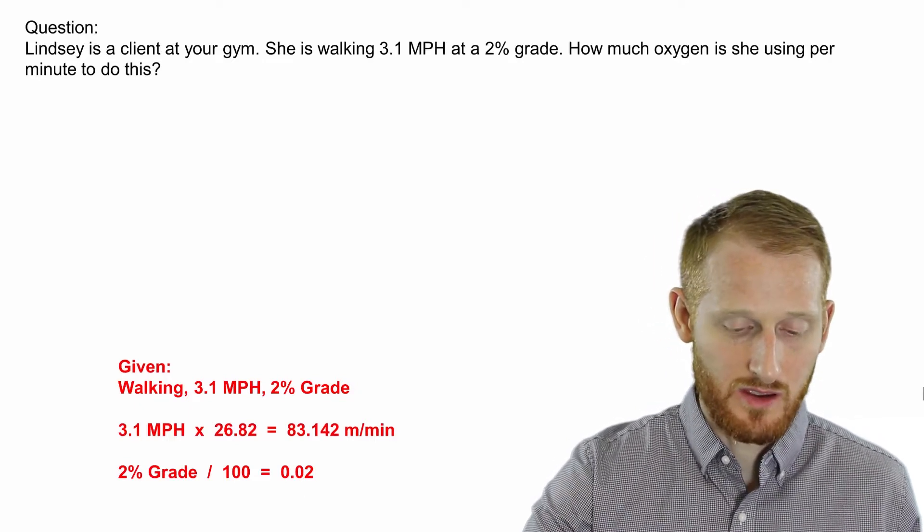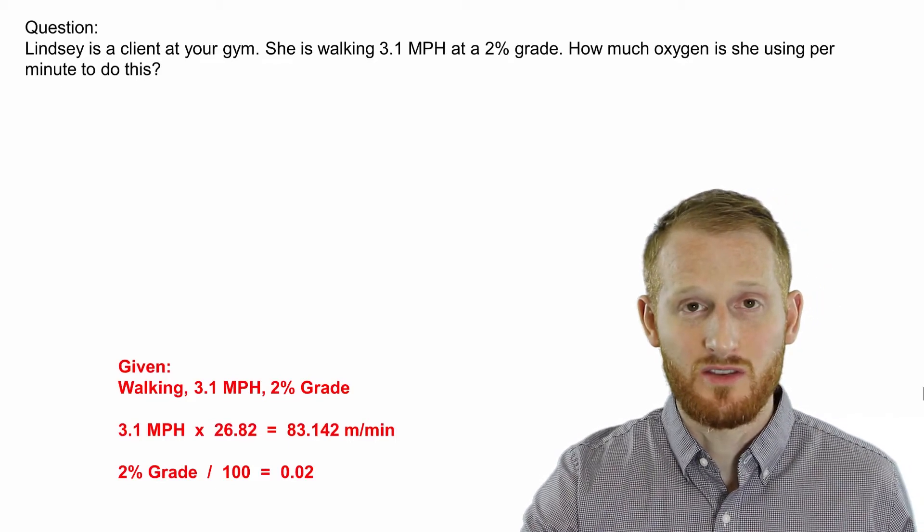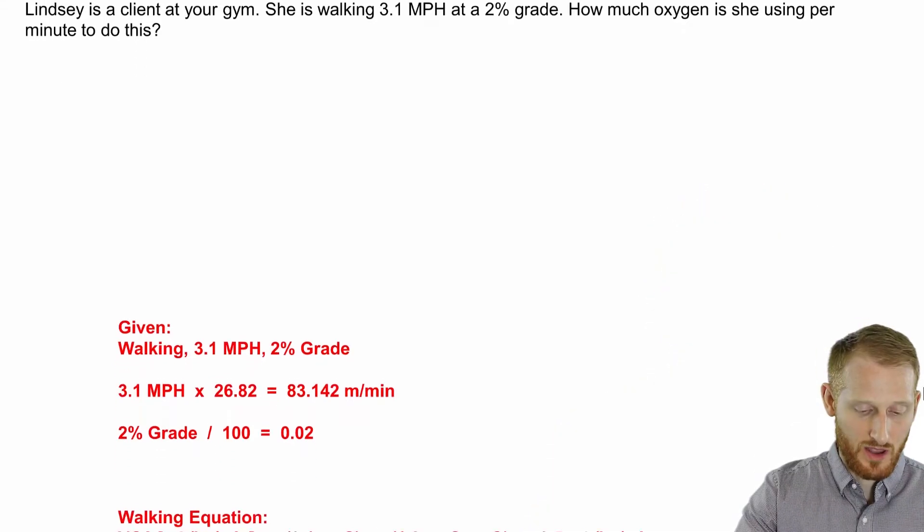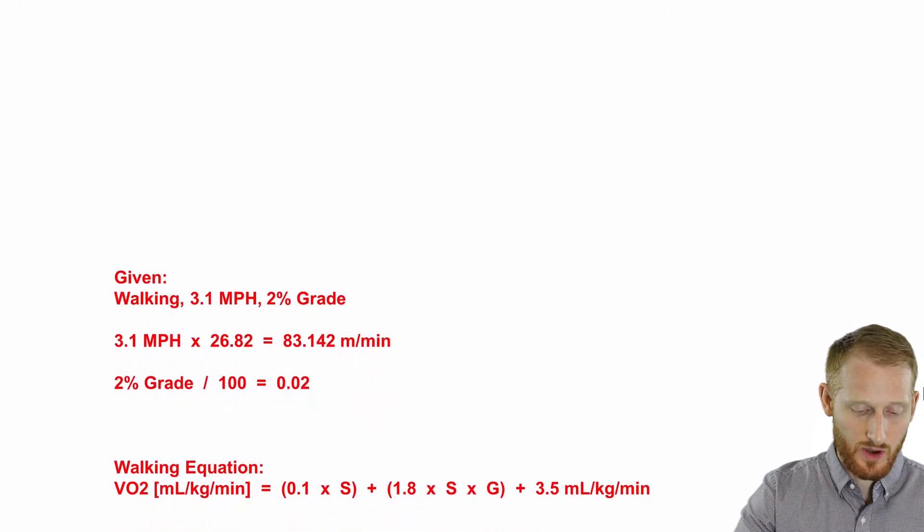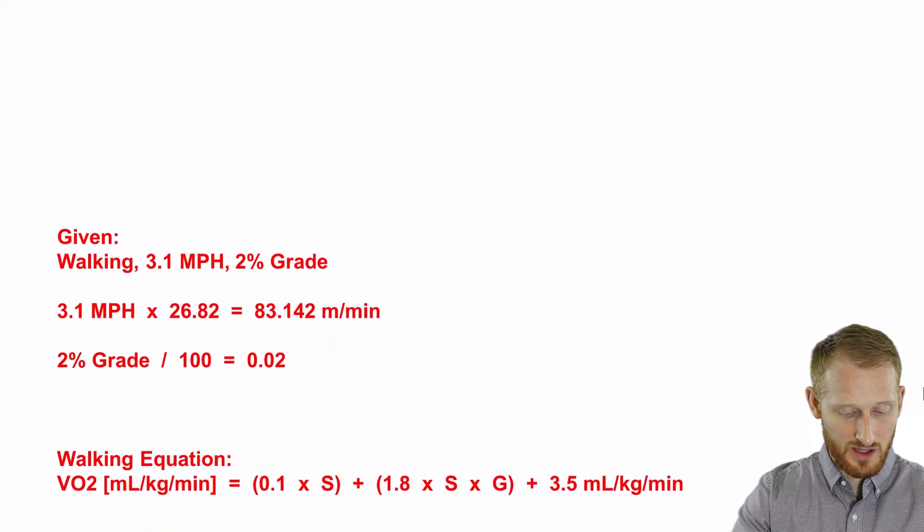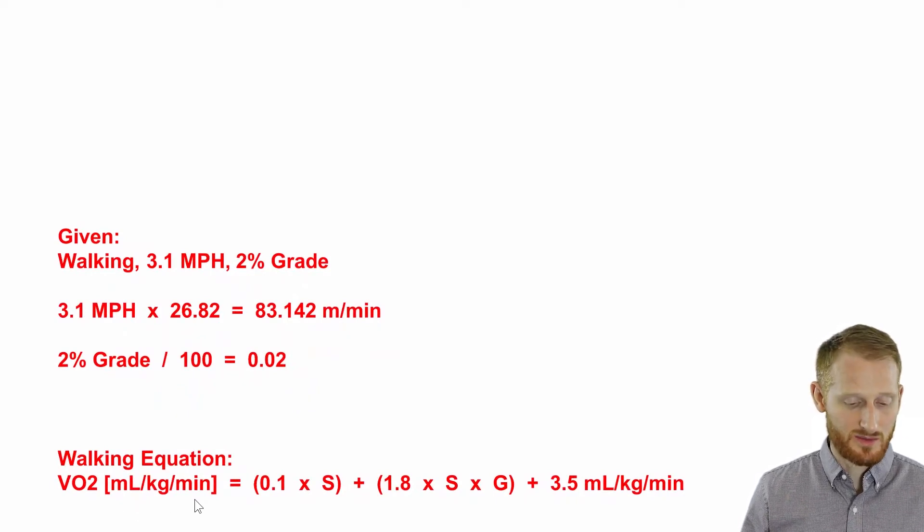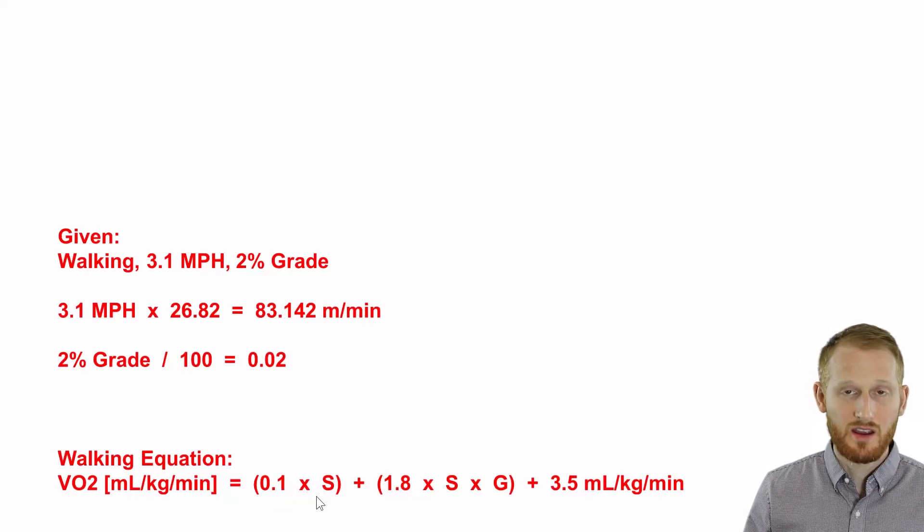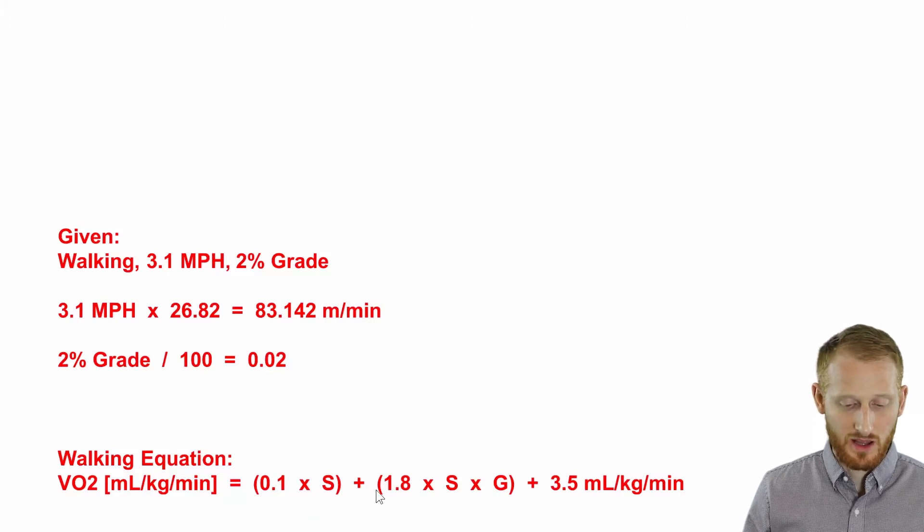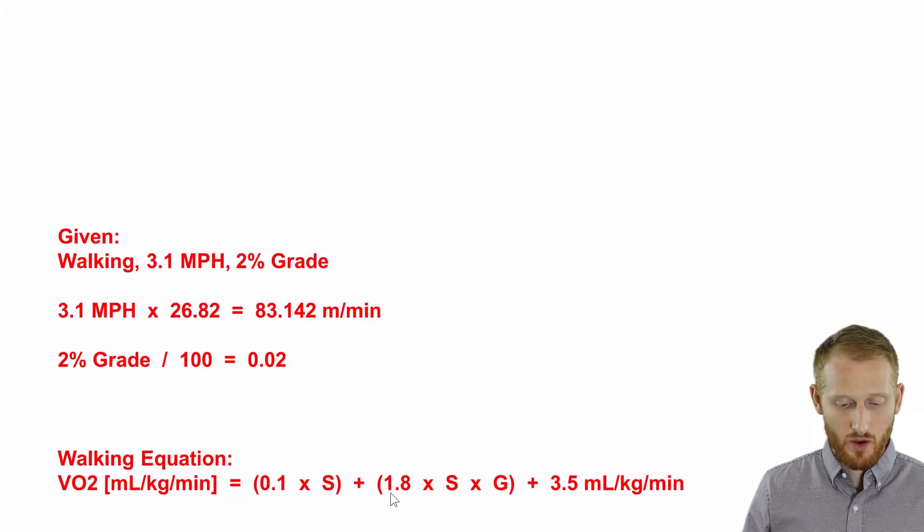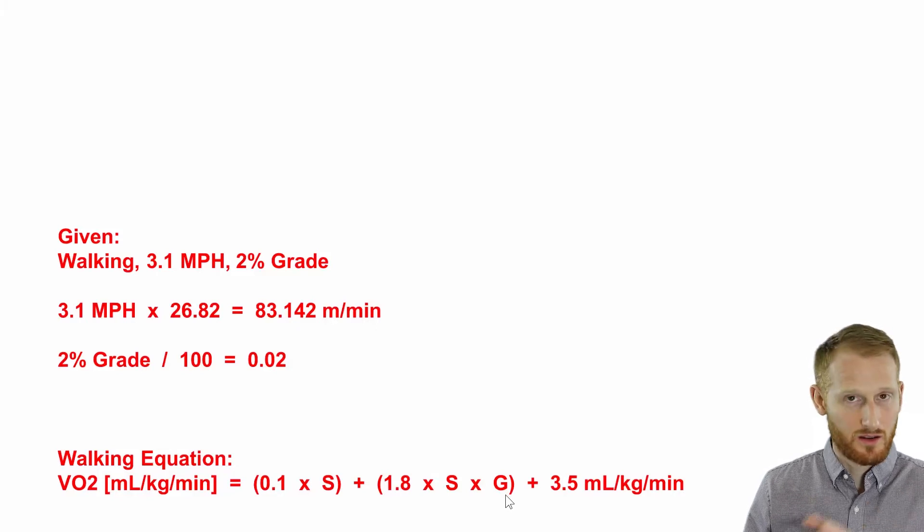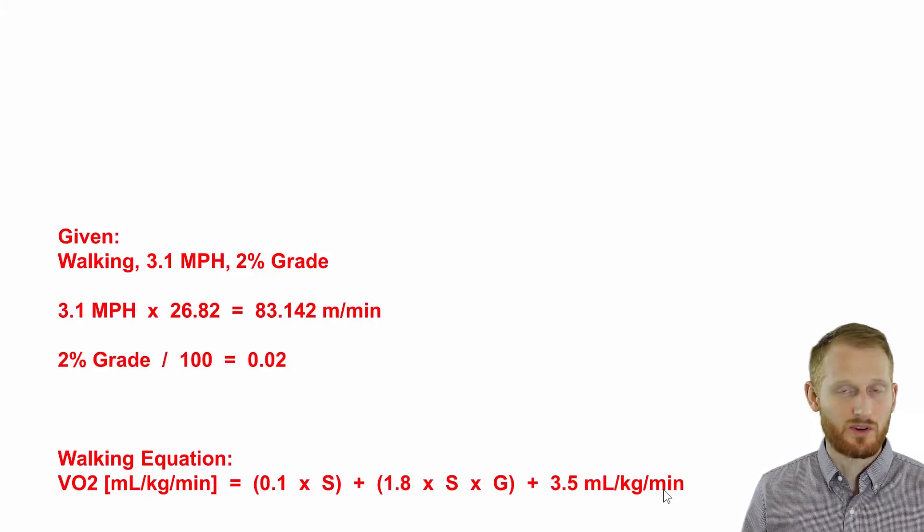Now that we have our values in the correct units, let's look at the walking equation. The walking equation is oxygen consumption in relative units, milliliters of oxygen per kilogram of body mass per minute, equals open parenthesis 0.1 times speed close parenthesis, plus open parenthesis 1.8 times speed times grade close parenthesis, plus 3.5 mL/kg/min. This 3.5 represents the resting component of this activity.